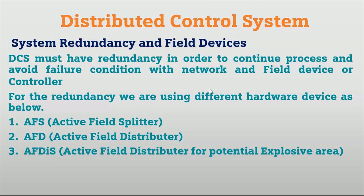System redundancy and field devices: DCS must have redundancy in order to continue the process. In abnormal conditions, any device or controller can fail, so the process must continue in real time. For redundancy we use different hardware devices like active field filter, active field distributor, and active field distributor for potentially explosive areas.